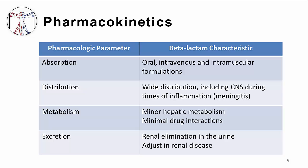Because of this property, beta-lactams are one of the first-line agents for the empiric treatment of bacterial meningitis. Some minor hepatic metabolism occurs in certain beta-lactams more than others. However, dosage adjustment in liver disease is not required, and the beta-lactams generally have minimal interaction with cytochrome enzymes within the liver, and therefore they have minimal interactions with other drugs. Penicillin and its metabolites are rapidly excreted in the urine via tubular secretion and glomerular filtration. For this reason, dosage adjustment is required for most beta-lactam antibiotics in a setting of renal dysfunction.